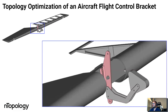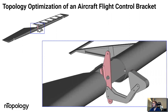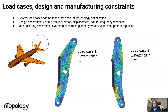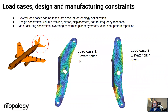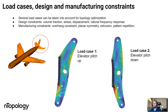This is why I'm showing you one example of a flight control bracket, which is a critical component for the safety of the aircraft. In this case, this is an elevator, so this will regulate the pitch-up and pitch-down of the airplane.